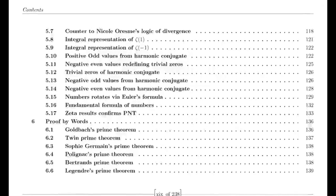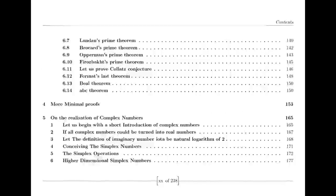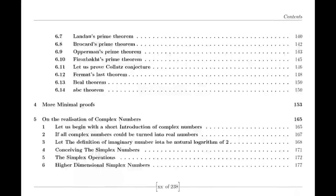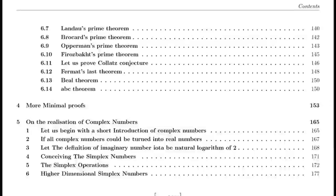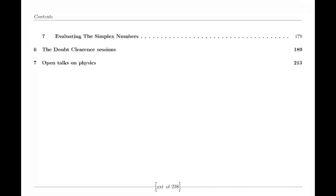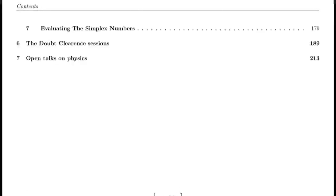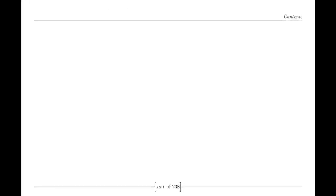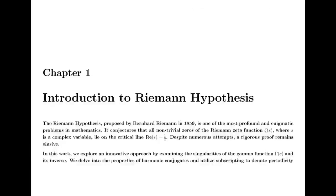Riemann was also influenced by the Dirichlet eta function, defined by an alternating series. This function is closely related to the zeta function and provides valuable insights into its behavior, particularly for values of s less than 1. The relationship between the eta and zeta functions is encapsulated in a formula involving the gamma function and powers of 2.